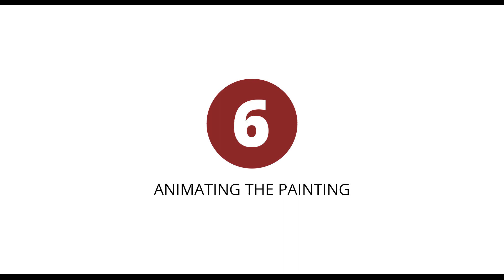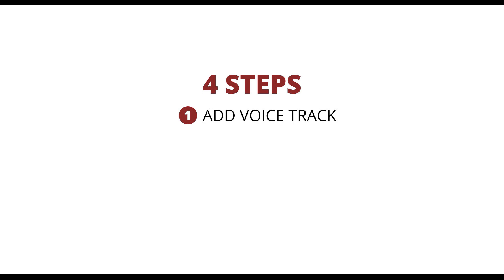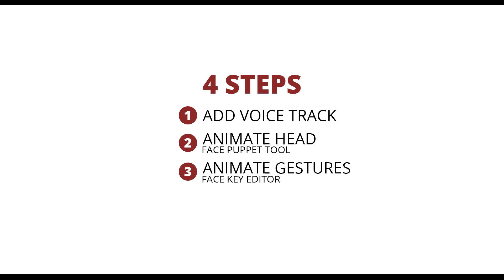So let's move on to step six: animating the painting. For the animation, I just import a background so it looks like it's the Louvre, and then I animate following these simple steps. Step one, add a voice track. Step two, animate the rotation of the head using the face puppet tool. Step three, animate some gestures using the face key editor. And finish with step four by animating the body using the 2D motion key editor. And voilà, we have an animation. I just add some music and camera movement and finish with an animation like this.